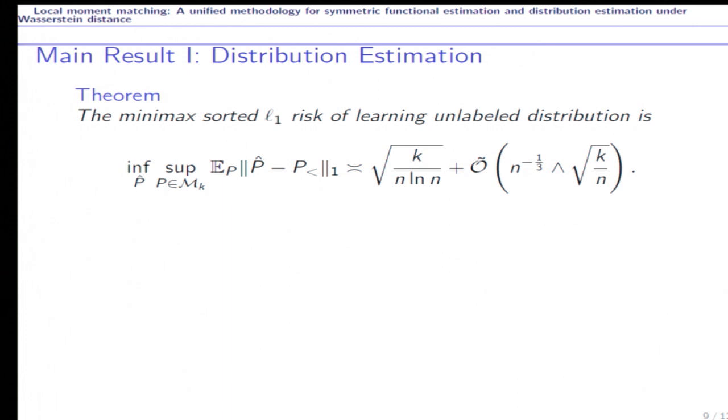So we have a complete characterization of the minimax sorted L1 risk of estimating the distribution up to permutation. Here the first term is actually the leading term. And as a direct corollary, we know that estimating sorted distribution is possible if and only if the sample size n is far greater than k over log k.